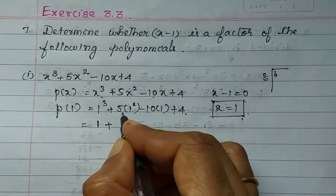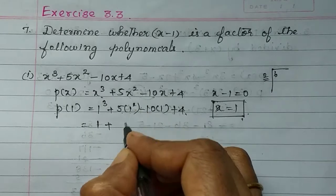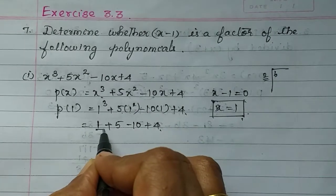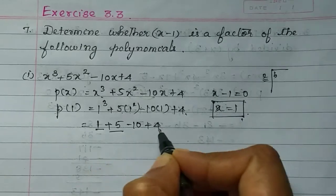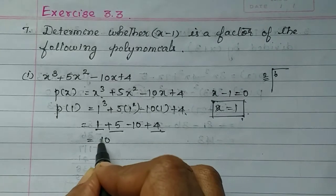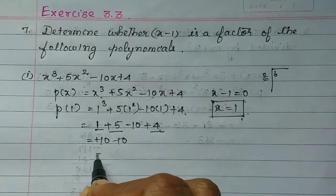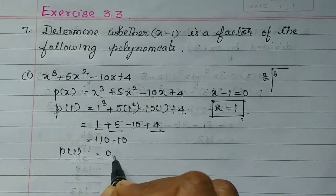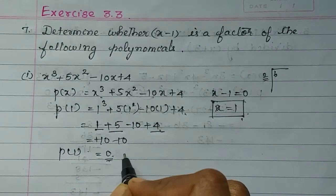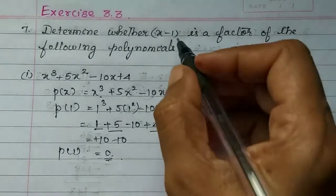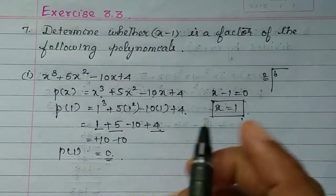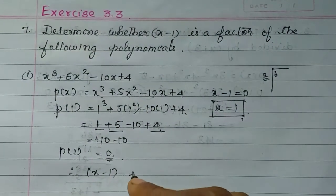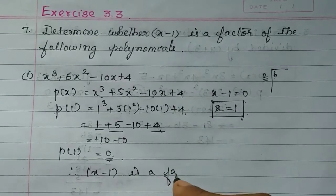1 cube is equal to 1. Then 5 times 1 is equal to 5, minus 10, plus 4. Now 1 plus 5 is equal to 6, and 6 plus 4 is equal to 10. So plus 10 minus 10 is equal to 0. P of 1 is equal to 0, so the remainder is 0. Therefore, x minus 1 is a factor of P of x.